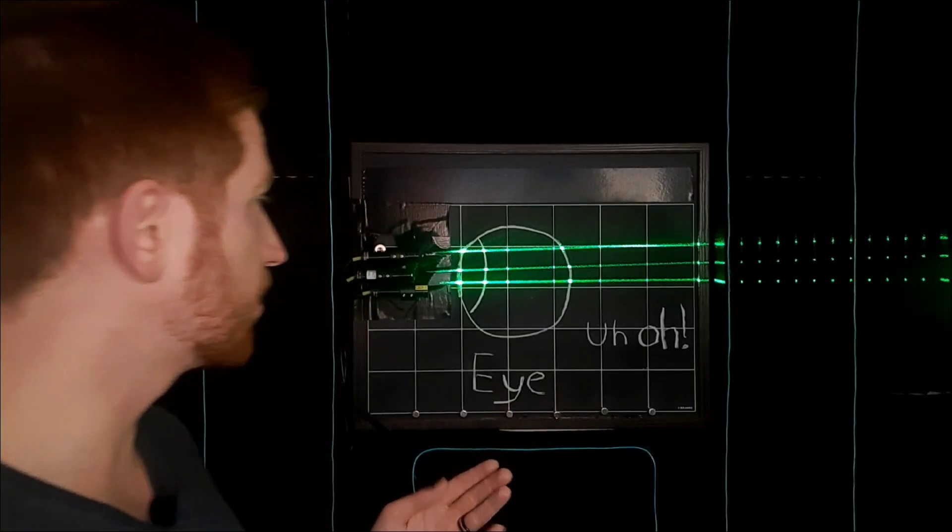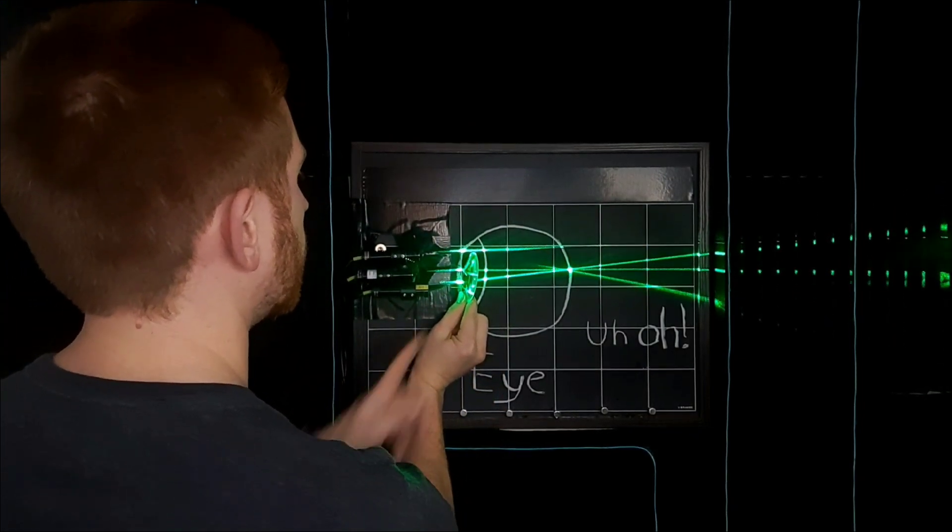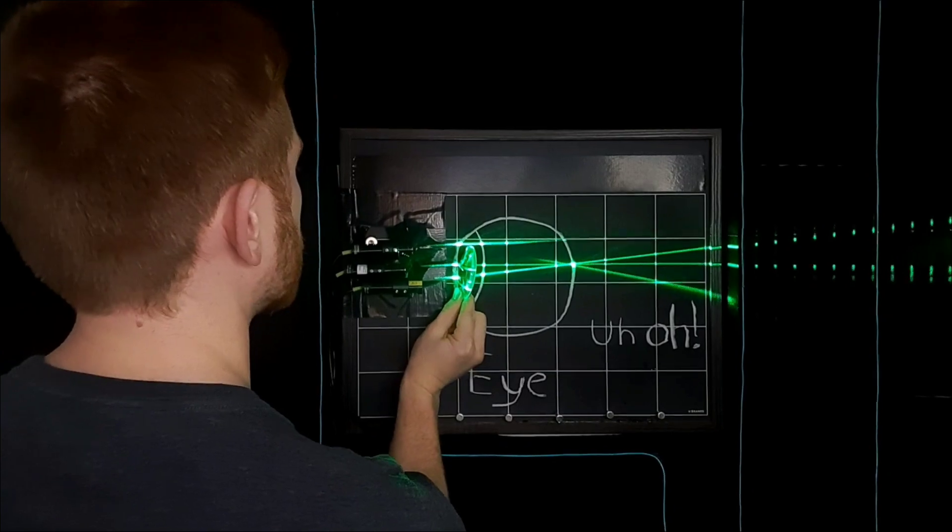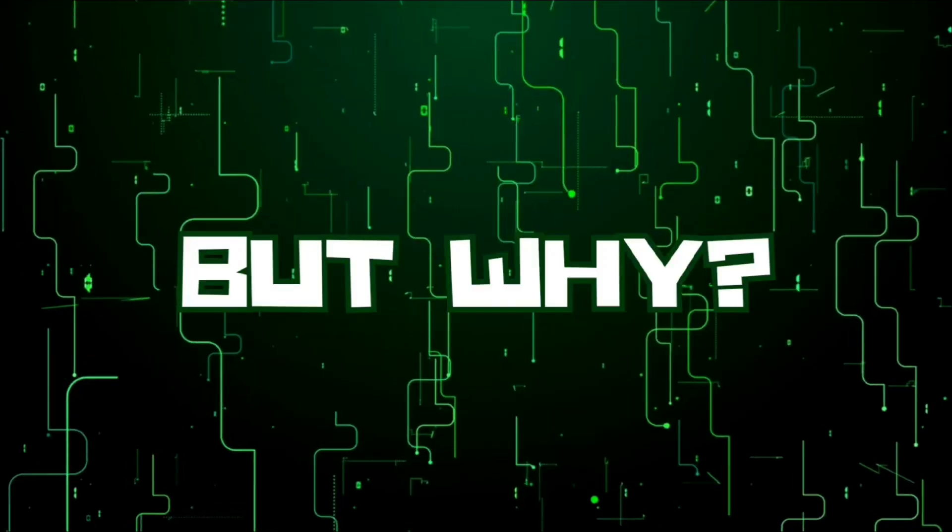With astigmatism, maybe the vertical direction of your eye focuses light just fine, but then in the horizontal direction you could be nearsighted or farsighted. But why would the effects of astigmatism be worse at night compared to during the day?